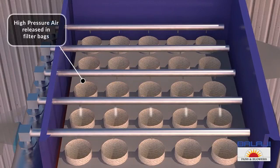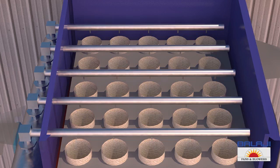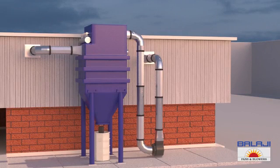The dust then falls off into the hopper. This process takes place at regular intervals of time, and this allows the filtration process to run smoothly. This is how a pulse jet dust collector system works.